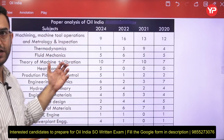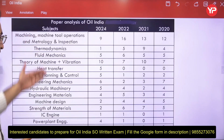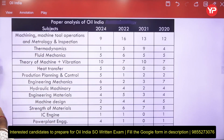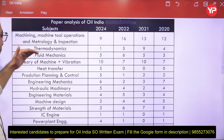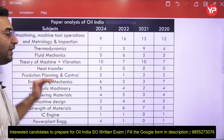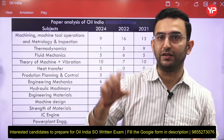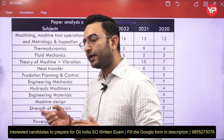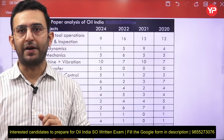Many subjects are covered in this exam, including production, thermodynamics — both basic and applied — fluid mechanics, fluid machinery, theory of machines, vibration, and industrial engineering. All of these subjects are covered within the 60 technical questions. Importantly, there are no questions related to mathematics, so you do not need to prepare mathematics for this particular recruitment.